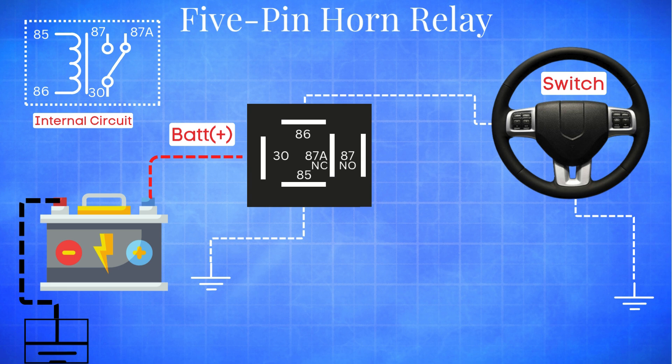Now, when the relay is not energized, pin 30 is internally connected to pin 87A, meaning the 87A circuit is live by default. However, 87A is usually not used in horn circuits, because we only want the horn to activate when the button is pressed.